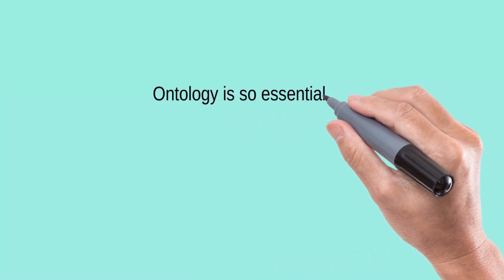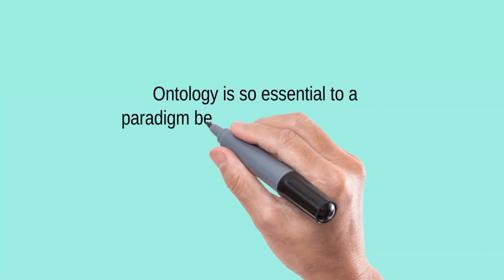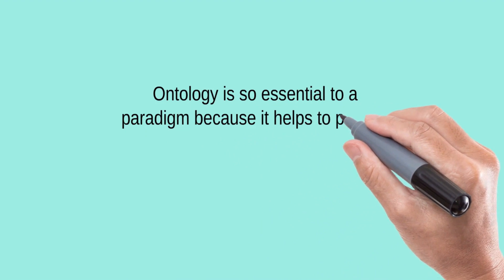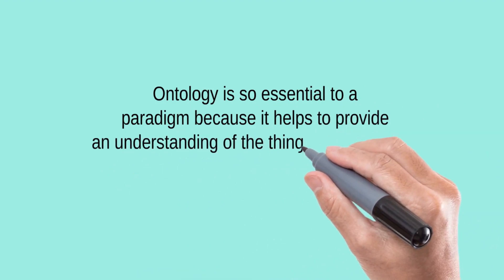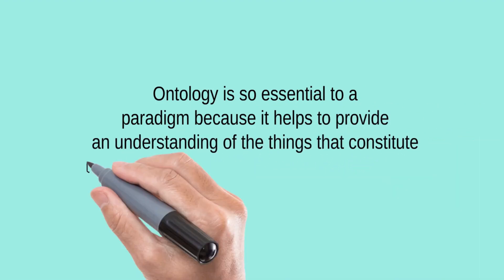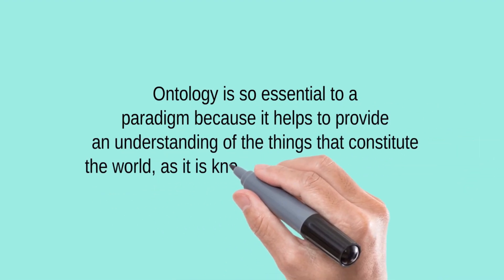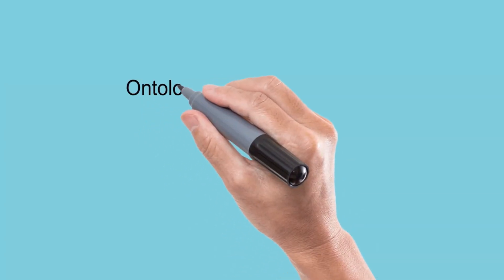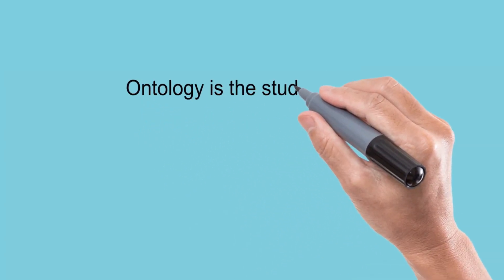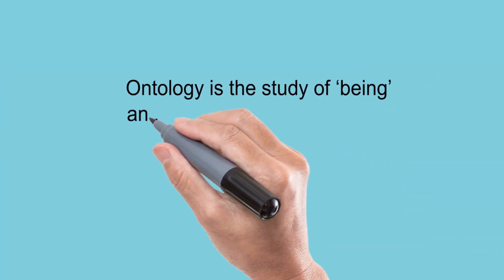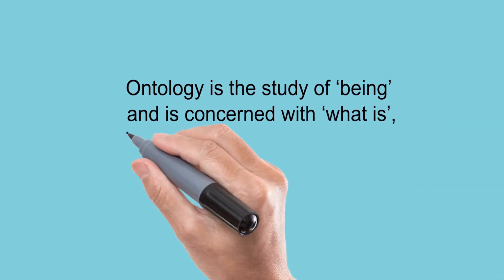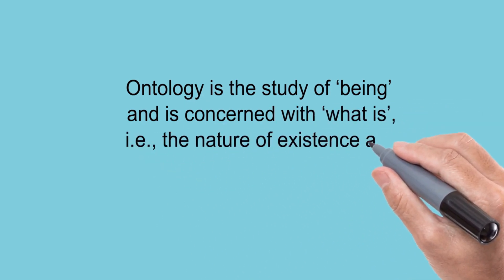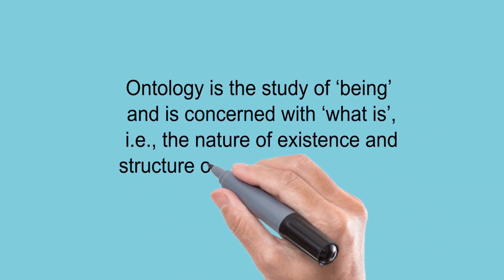Ontology is essential to a paradigm because it helps provide an understanding of the things that constitute the world as it is known — Scott and Usher in 2004. Ontology is a study of being and is concerned with what is — for example, the nature of existence and structure of reality — Crotty in 1998.